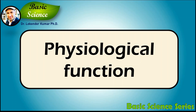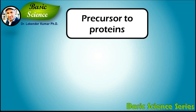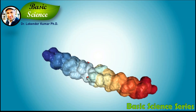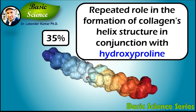The principal physiological function of glycine is as a precursor to proteins. Most proteins incorporate only small quantities of glycine. A notable exception is collagen, which contains about 35 percent glycine, due to its periodically repeated role in the formation of collagen helix structure in conjunction with hydroxyproline.